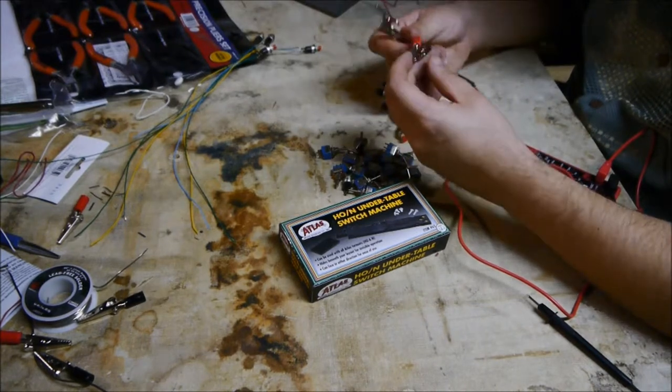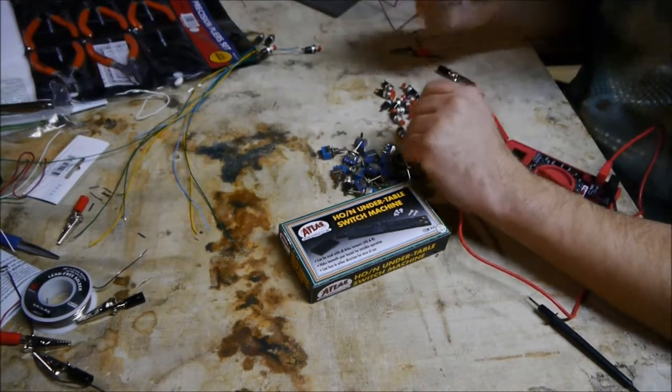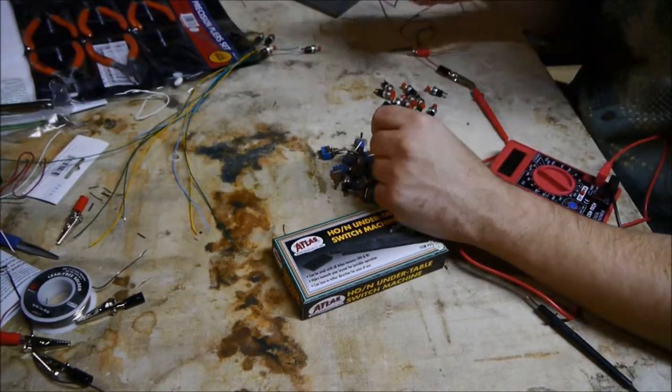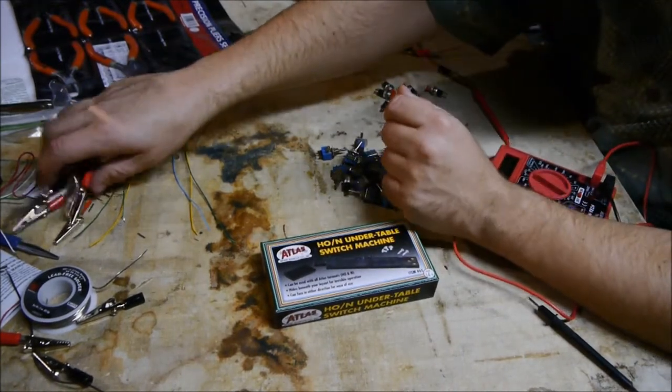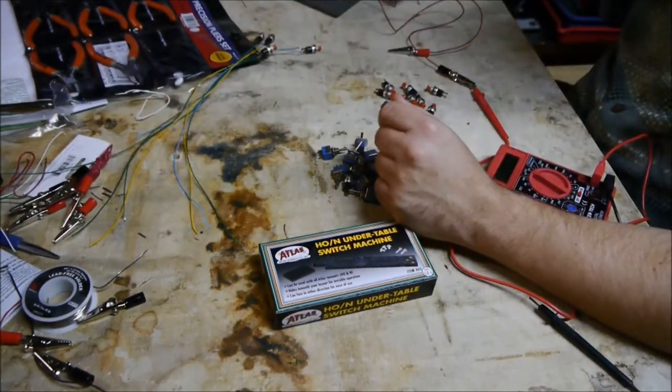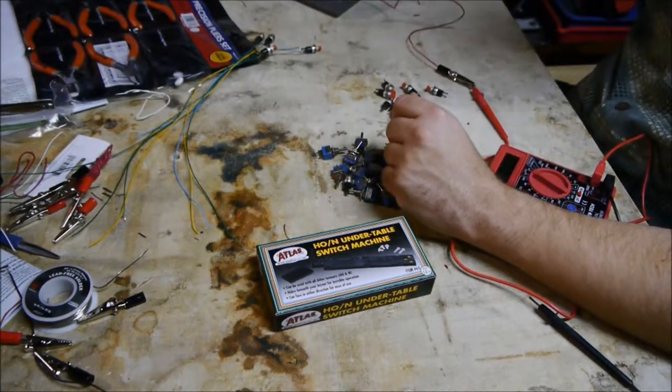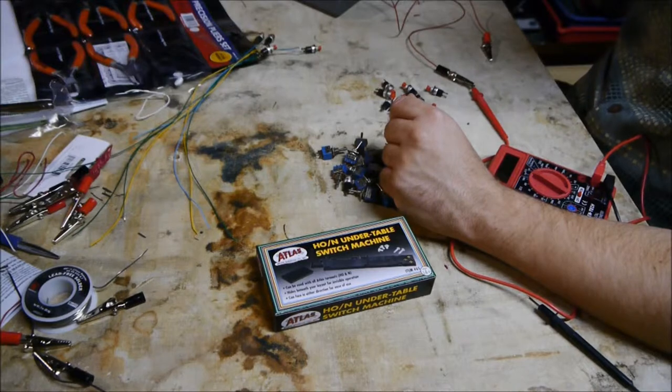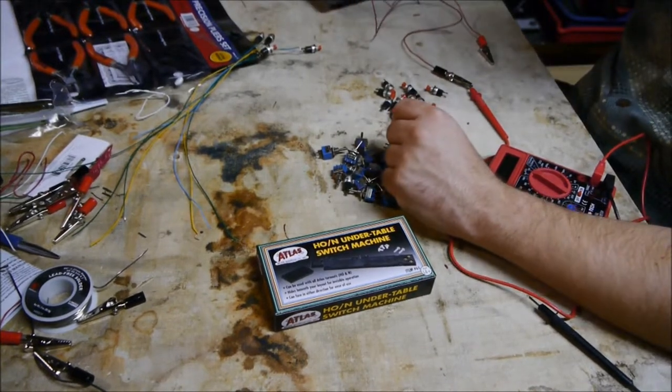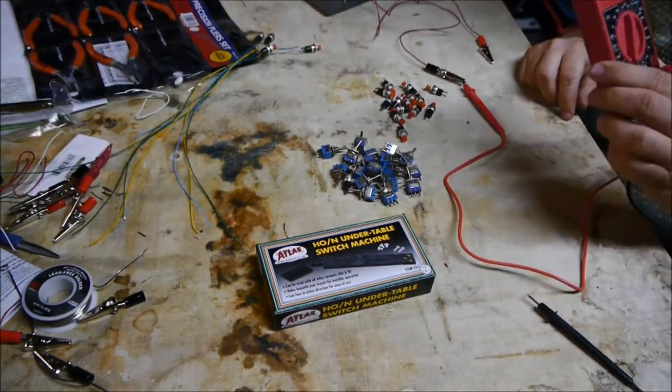So I have some test leads that I made myself with alligator clips I got at Radio Shack. I don't buy a lot of electronics at Radio Shack because they're kind of expensive. And I have here my power supply that I'm going to use on the layout later on. And I have that hooked up to the AC terminals here, and a voltmeter.